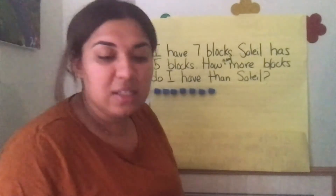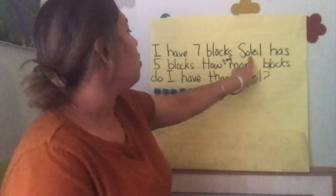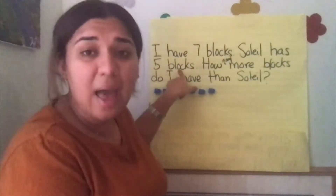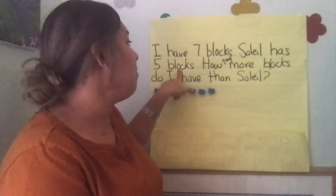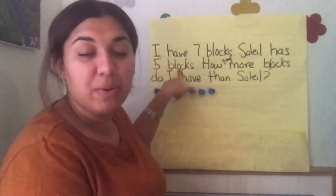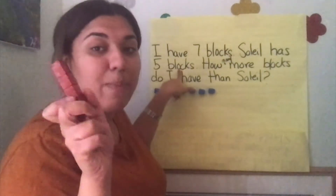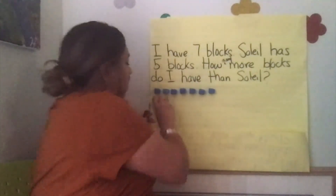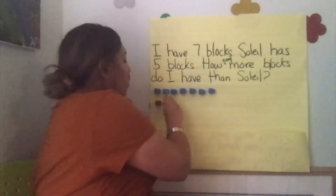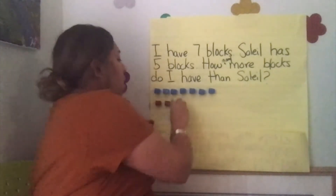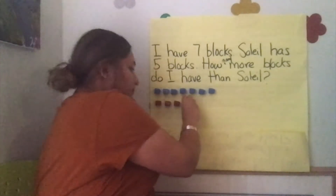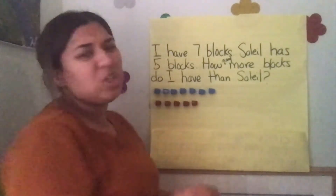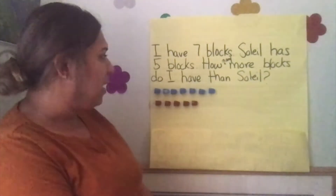Let's read on to see what happens next. Soleil has five blocks. How many blocks does Soleil have? Five blocks. How do we represent five blocks? We put five cubes. Let's put them down: one, two, three, four, five.